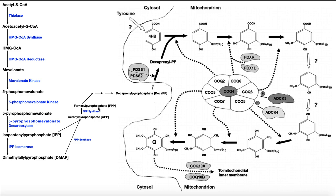There are further condensation reactions that produce larger isoprenoids, and the one we terminate at is called decaprenyl pyrophosphate. These reactions occur in the cytoplasm, and decaprenyl pyrophosphate is then transported into the mitochondria. This is one of the two major precursors to coenzyme Q. The other precursor is 4-hydroxybenzoic acid, or parahydroxybenzoic acid, whose precursor is tyrosine. Note that this pathway is not completely elucidated — some details have not yet been worked out.